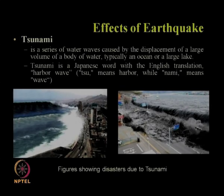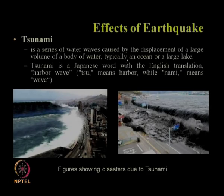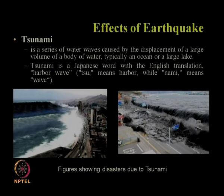Another effect of earthquake is tsunami. Tsunami is a series of water waves caused by the displacement of a large volume of a body of water, typically in an ocean or large lake. Tsunami is a Japanese word—TSU means harbor and Nami means wave—so it can be called a harbor wave. This picture shows a tsunami wave coming from the sea and thrashing on the shore, washing out the entire road, cars, and buildings located close to the sea.